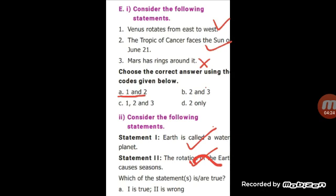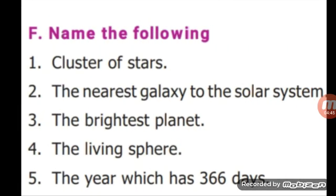Next question: Earth is called a watery planet. This statement is true. Next, the rotation of the earth causes seasons. This statement is false. The rotation of the earth causes day and night. The best answer is A. Next, name the following. Cluster of stars. Galaxy means cluster of stars.